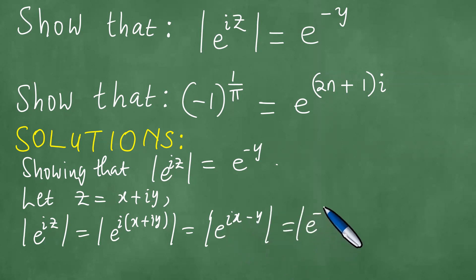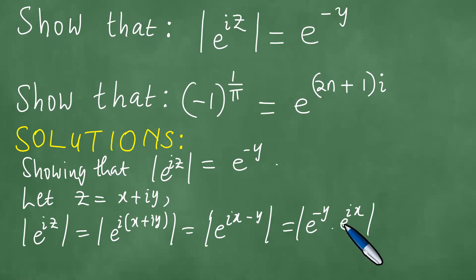Which is e to the ix minus y. And this is e to the minus y, e to the ix. Right, so which means therefore you have e to the iz. And we have already seen that it's e to the minus y times e to the ix. That's what we have here.